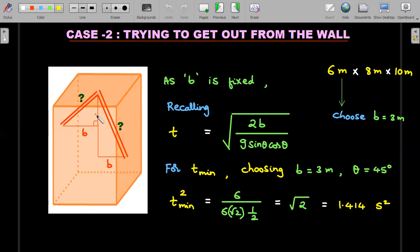As you could see, case 2 is about trying to get out from the walls. You could get out from the wall on this side or wall on this side, or wall from the front or wall from the back. Please understand, if you are having the dimensions of 6m × 8m × 10m, you can choose b either due to this 6 meter or b either due to 8 meter.